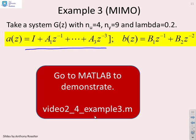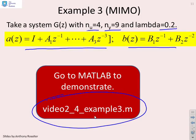We're going to put in a multivariable problem. We're going to use N_u equals 4, N_y equals 9, Lambda equals 0.2. And you can see the particular file is video2_4_example3.